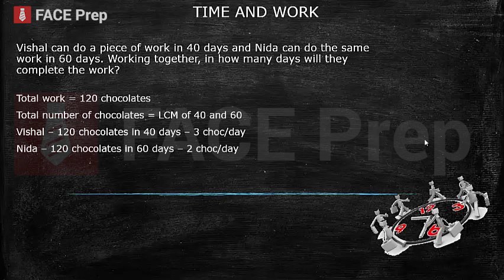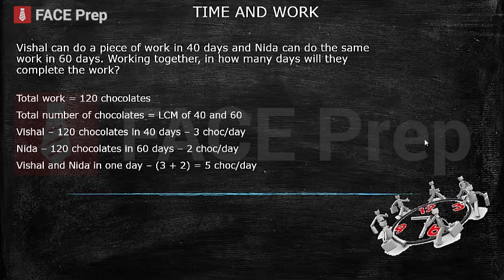According to the question, Vishal can do the work in 40 days, meaning Vishal can eat 120 chocolates in 40 days, so in one day Vishal will eat 3 chocolates. Nida can eat 120 chocolates in 60 days, that means Nida can eat 2 chocolates in a day. Working together, Vishal eats 3 chocolates in a day and Nida eats 2 chocolates in a day, so together they will eat 3 plus 2, that is 5 chocolates in a day.